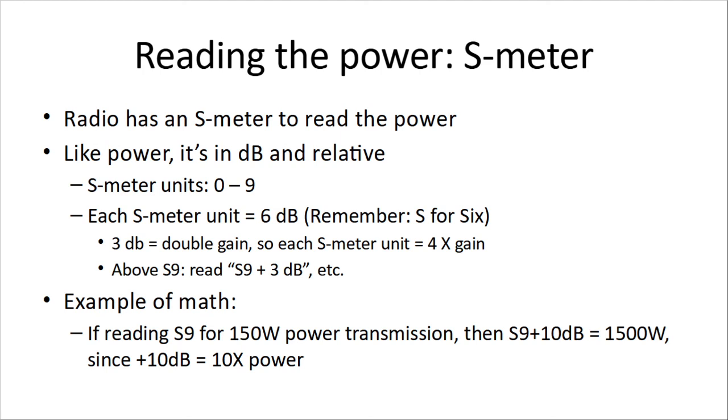And then above S9, you're going to read it S9 plus 3 dB. If somebody's transmitting and you're receiving at S9 plus 3 dB, you want them to drop their power. Here's an example of the math. If we're reading S9 when somebody's transmitting at 150 watts of power, then S9 plus 10 dB will be 10 times the power. And that'll be 1,500 watts.